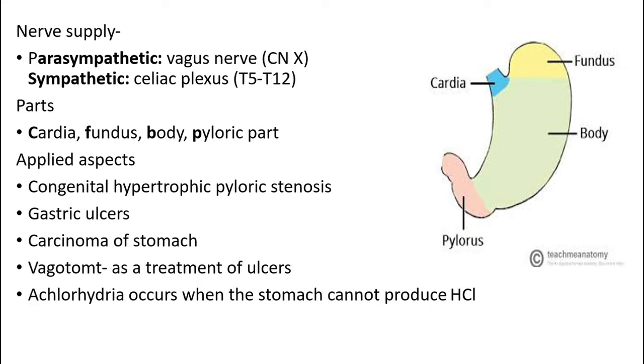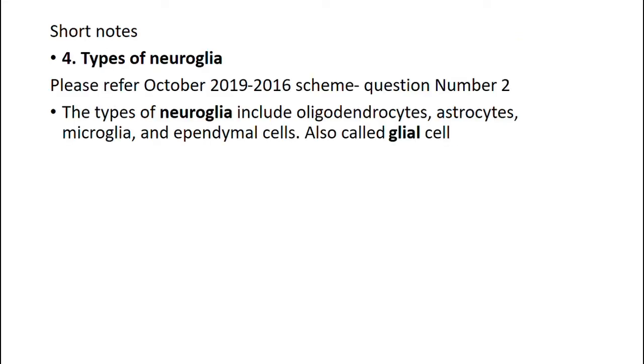Achlorhydria occurs when the stomach cannot produce hydrochloric acid, which is essential for digestion. Gastrectomy is the removal of the stomach or a part of the stomach.